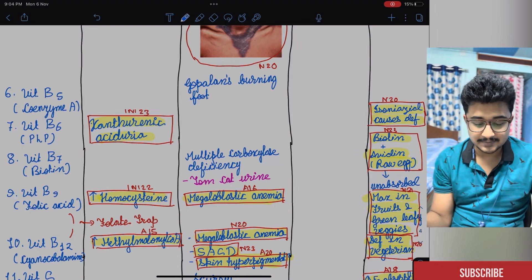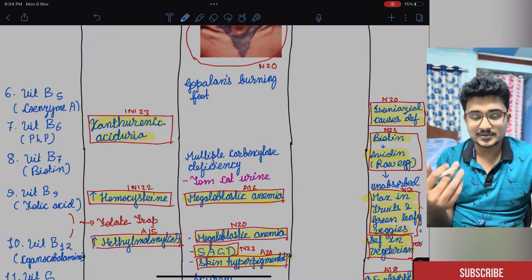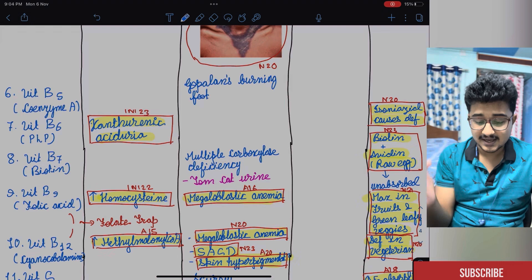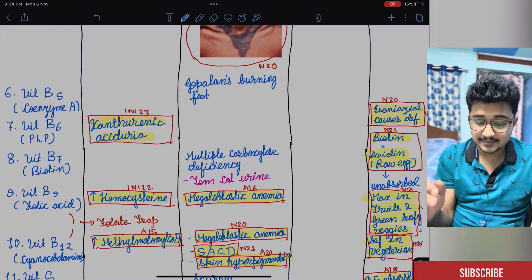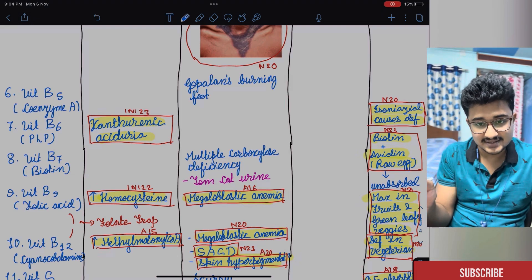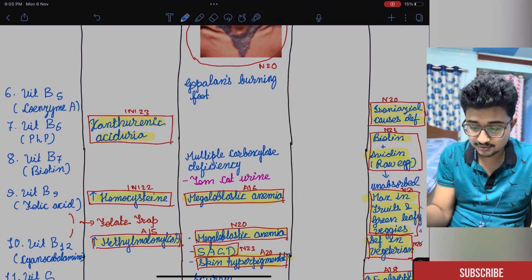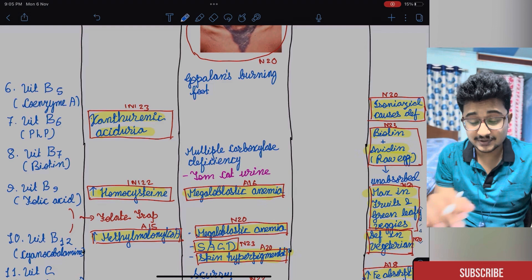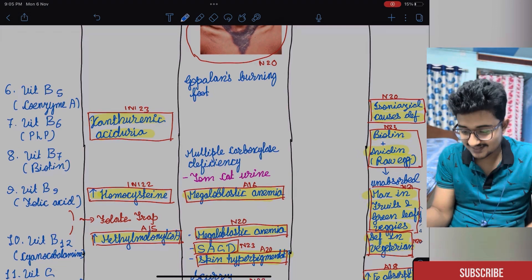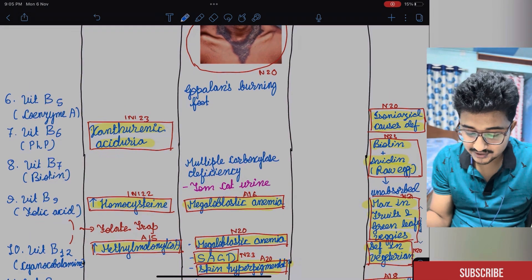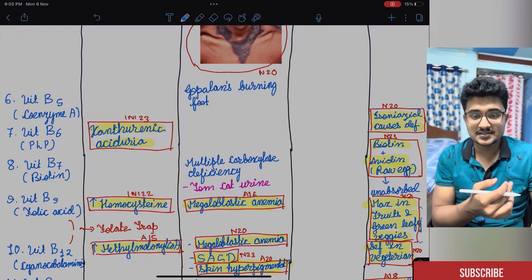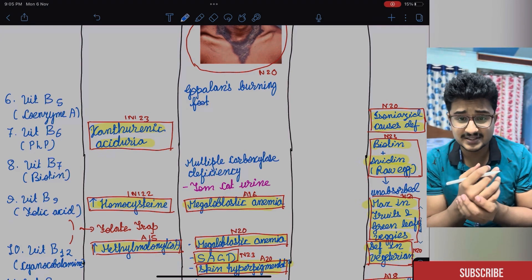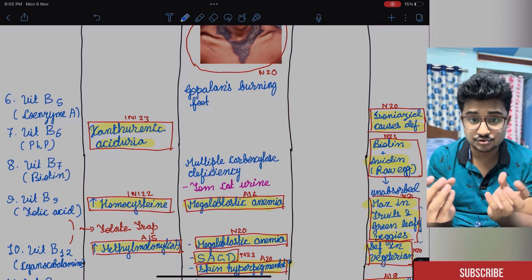And then after that is vitamin B6, that is pyridoxal. Active compound is pyridoxal phosphate. Biochemically, xanthinuric acid is elevated and it causes xanthinuric aciduria. There is a chemical reaction. I am not showing it here. It was asked in this year, INICT. And isoniazid causes the deficiency of vitamin B6. So you need to supplement with vitamin B6. It can cause anemia and acanthocytosis also.